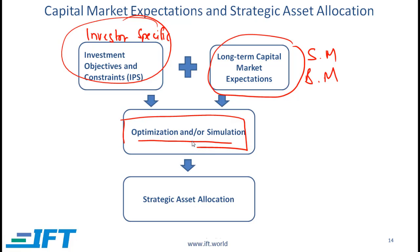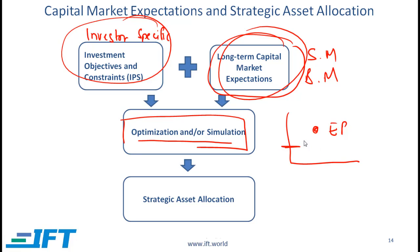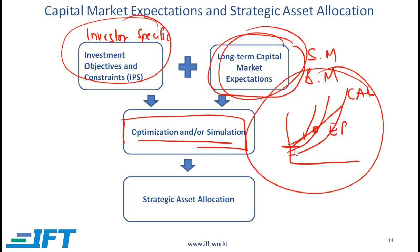The work that happens here is largely done through computer systems, but we have learned material in the last two readings which is applied. Given the capital market expectations, there will be a certain efficient portfolio, a certain risk-free rate, and we will come up with a capital allocation line based on our expectations of the market. The IPS essentially defines the indifference curves for our investor. We combine this to define the optimal allocation across different asset classes, and that optimal allocation is called the strategic asset allocation, or the SAA.